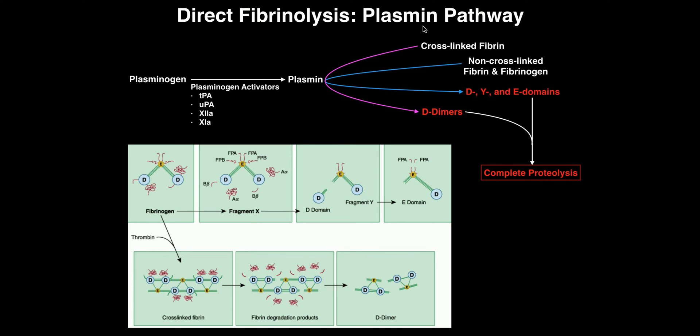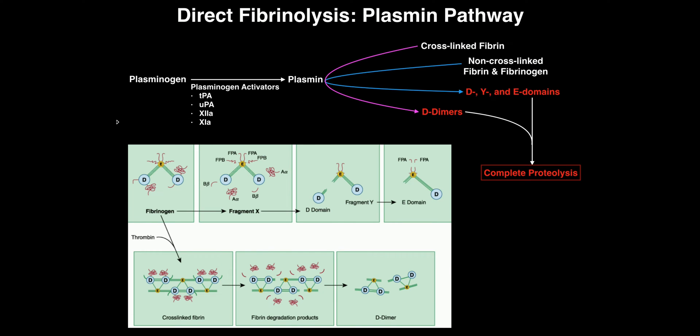So I have a protein that's going to be circulating in the blood called plasminogen. The '-ogen' ending tells you that it's an inactive protein and has to be activated to plasmin to perform its function.